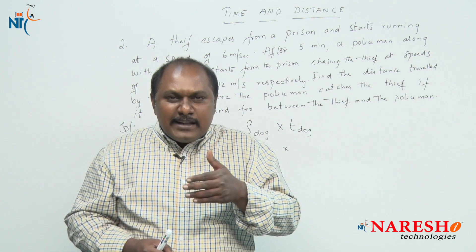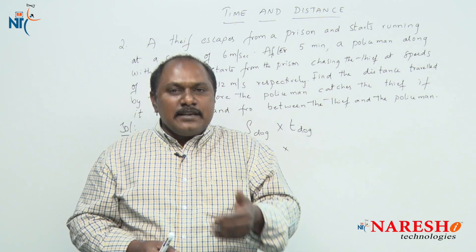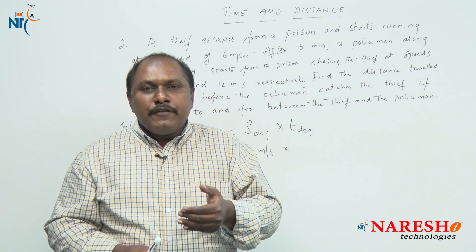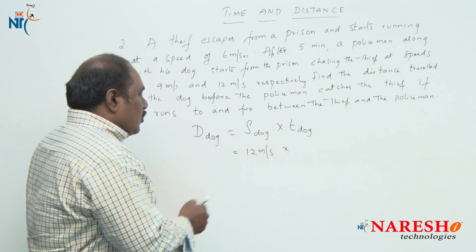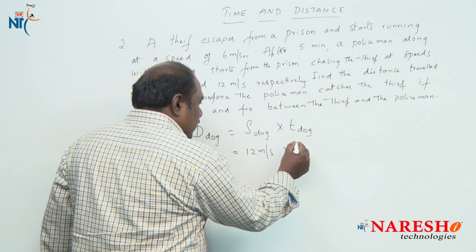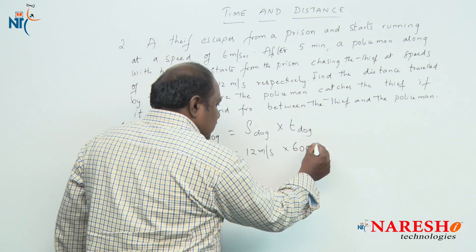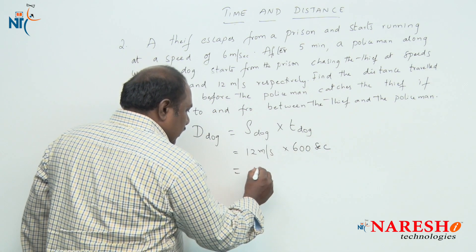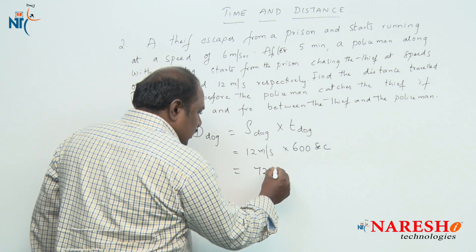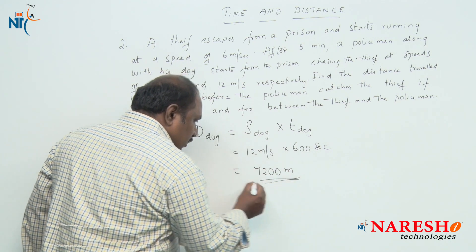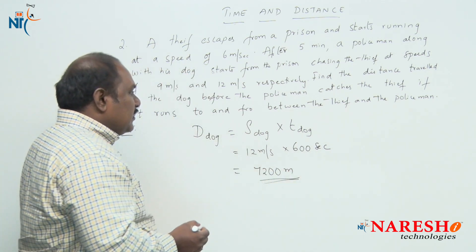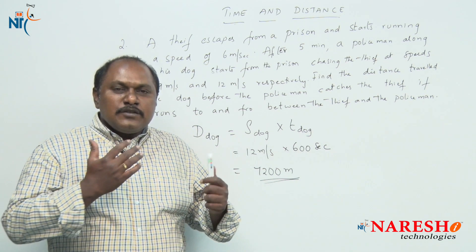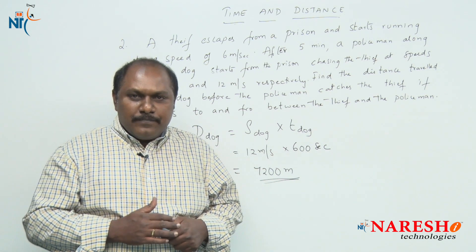The policeman catches the thief after 600 seconds. So the dog also runs for 600 seconds. The distance travelled by the dog is 12 meters per second × 600 seconds = 7200 meters. So the answer for this question is 7200 meters. This is one way of answering this question.